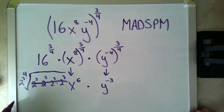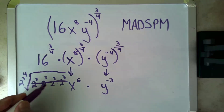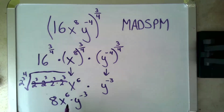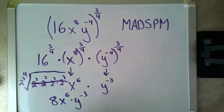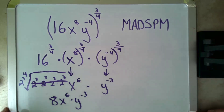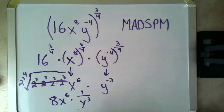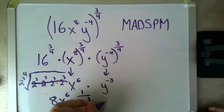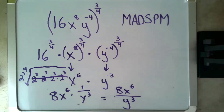Now I put it all together. Two to the third is eight. So I have eight times x to the sixth times y to the negative three. A negative exponent means one over the positive version of that exponent, so y to the negative three gets rewritten as one over y to the positive three. Putting it all together: eight x to the sixth over y to the third.